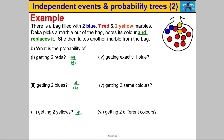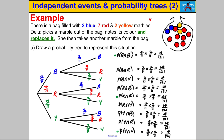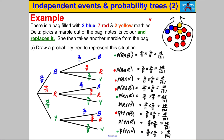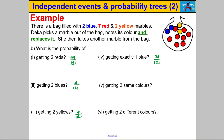Now the probability of exactly one blue — let's highlight those scenarios: blue-red, blue-yellow, red-blue, and yellow-blue. Adding up: 14 plus 4 is 18, plus another 14 is 32, plus another 4 is 36 out of 121. For the probability of two the same color, that's blue-blue, red-red, or yellow-yellow: four plus four plus 49 equals 57 out of 121.